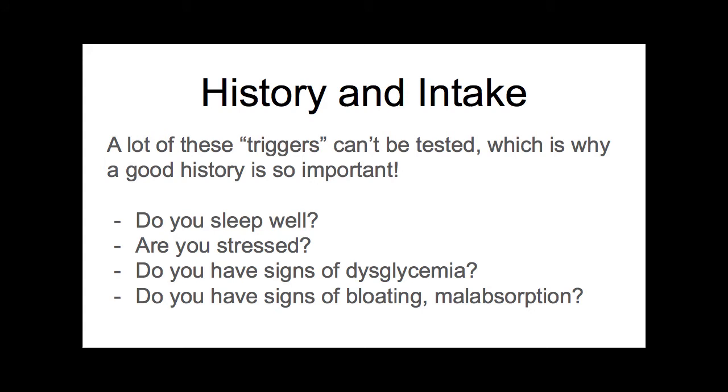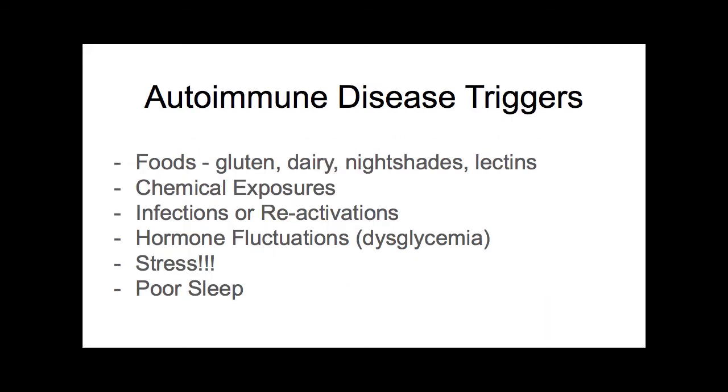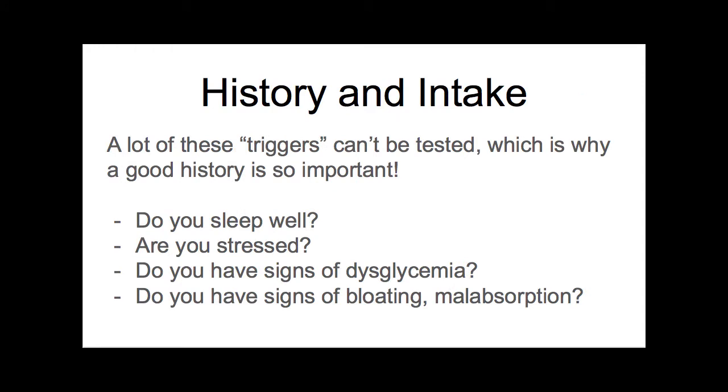Clinically, figuring out which trigger applies to a specific person is really, really hard. The most important test anyone can have — especially with an autoimmune disease — is a good history and intake. We sit down with patients for 90 minutes, and even that's often not long enough. We have to ask them, figure out their history, and see what their symptoms lead us toward. How do they sleep? How stressed are they? What is their job, their personal relationships, their schedule? Do they travel often? Have they had chronic issues since childhood? Have they had allergies or a hysterectomy?